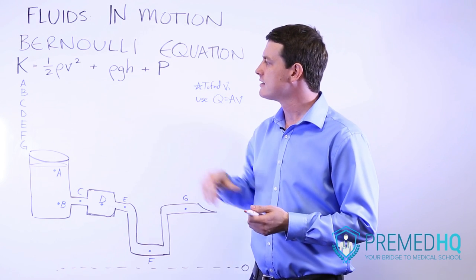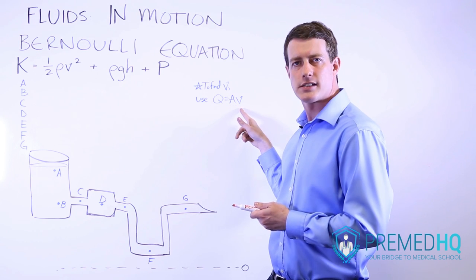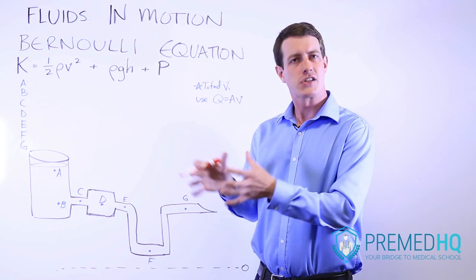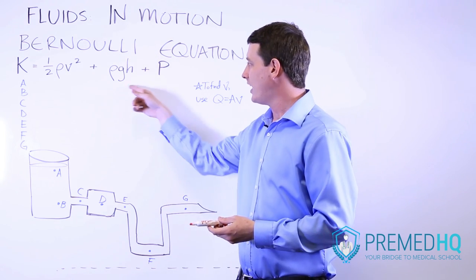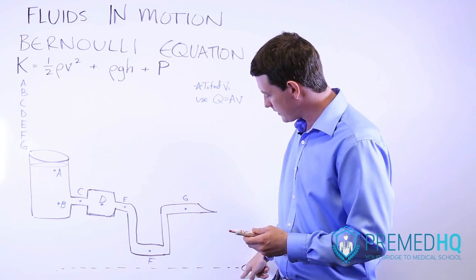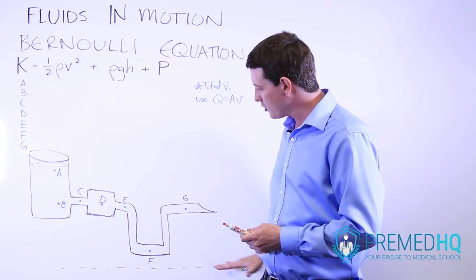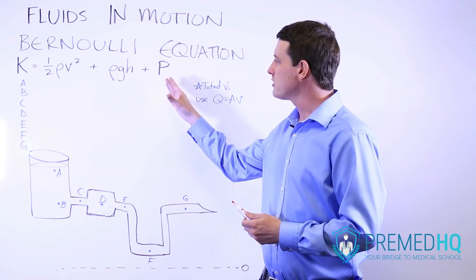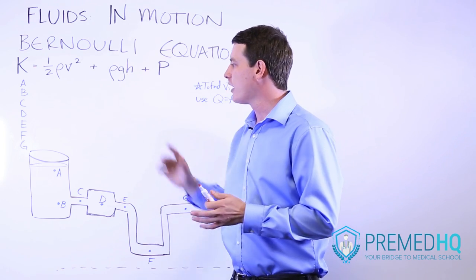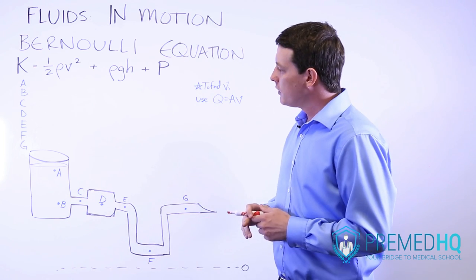The first step to figure out velocity is to look at the volume flow rate formula: Q = A × v. If it has a larger cross-sectional area, the velocity goes down. Height is simple — just look at how high that point is above your chosen ground level of zero. Pressure is usually the last one you evaluate, after considering kinetic and gravitational components.